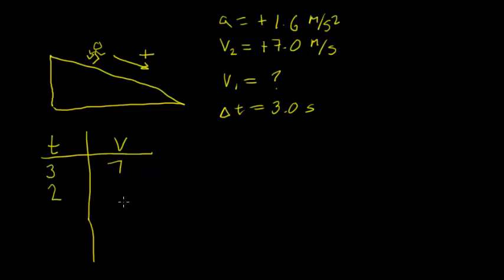But what was the velocity 1 second ago when the time was 2? We know he's accelerating at 1.6 meters per second every second. If we subtract 1.6 meters per second from these 7 meters per second, we get 5.4. So 1 second ago, his velocity was slower, 5.4 meters per second. 2 seconds ago, when the time was 1, we subtract another 1.6 meters per second, getting us down to 3.8.